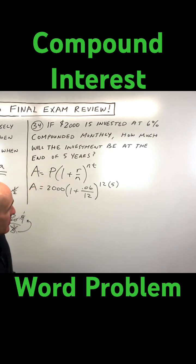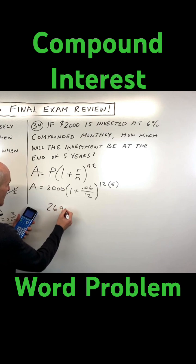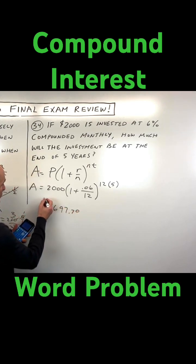So let's go ahead and put that in our calculator. That comes out to $2,000, 1 plus 0.06 divided by 12, raised to the 12 times 5, which is the 60th power. So this is coming out to $2,697.70. You want to round to the two decimal places.